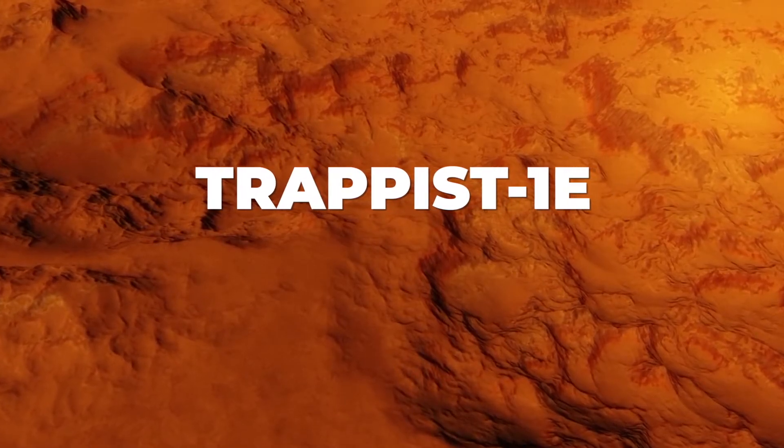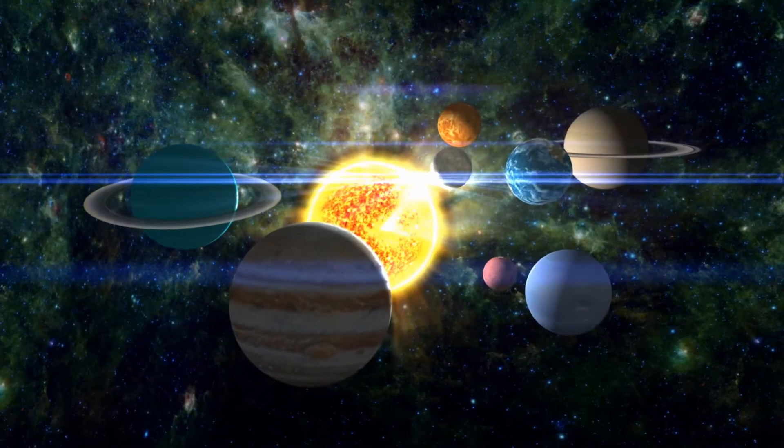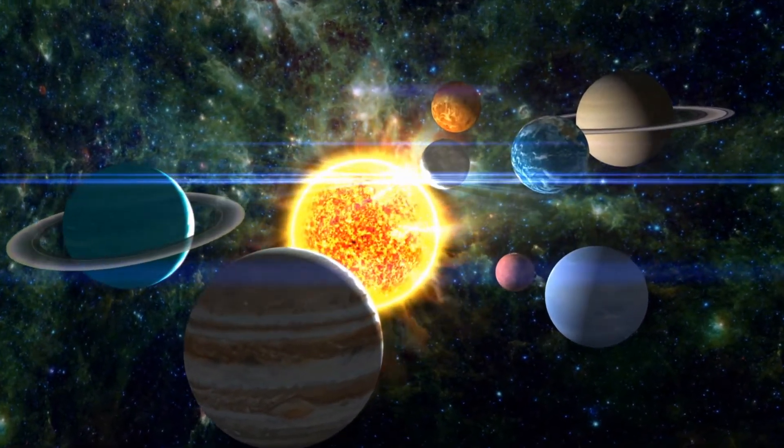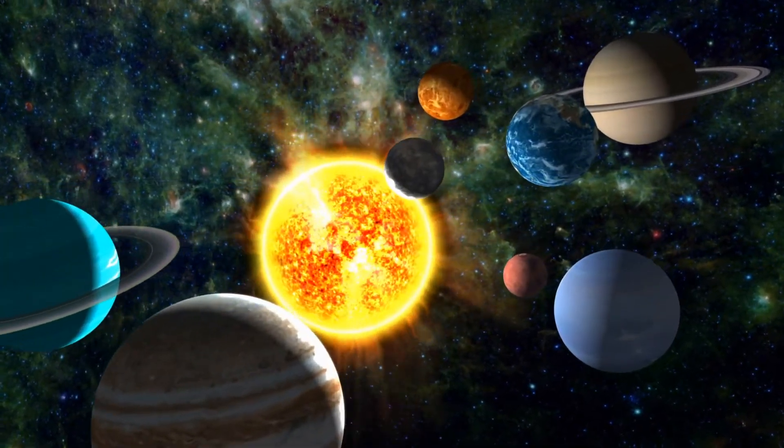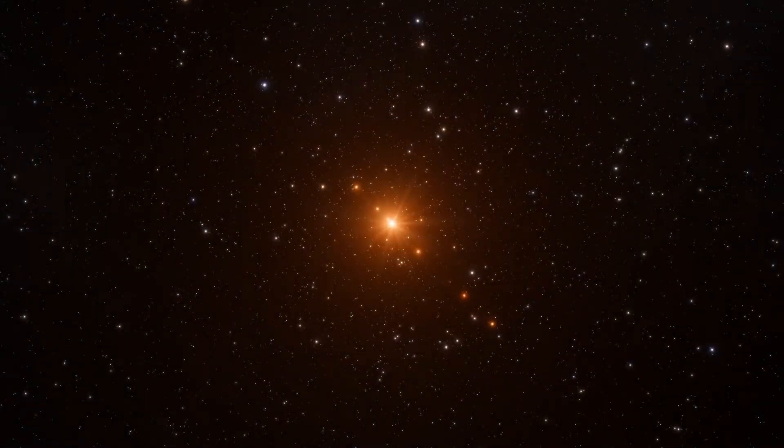Trappist-1e is a part of a fascinating family of seven Earth-sized planets. An exoplanet in the star system, Trappist-1 is the fourth planet counted from the star. It is located relatively close to its host star and completes an orbit around its star in 6.1 Earth days.